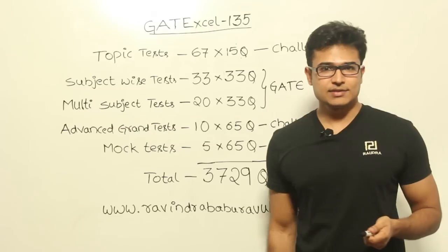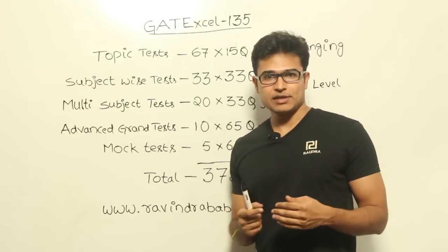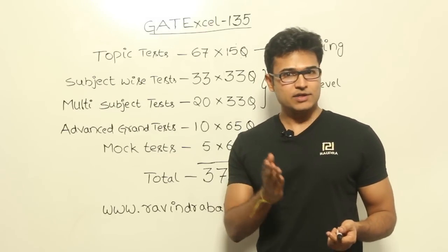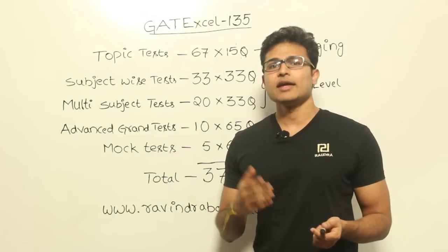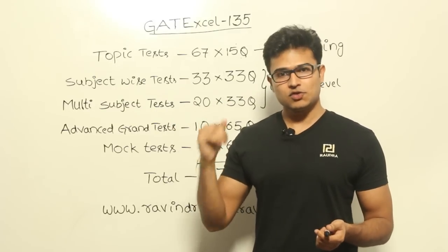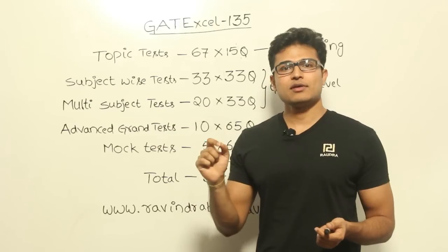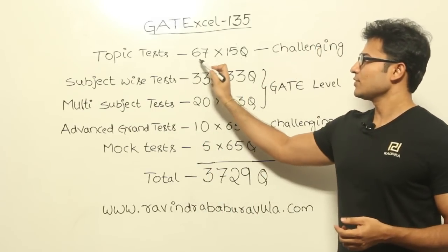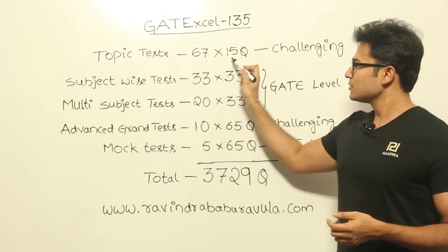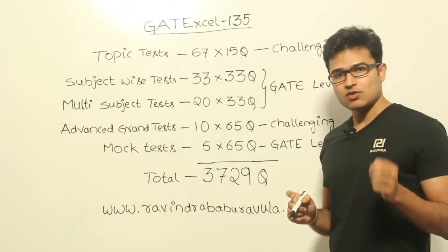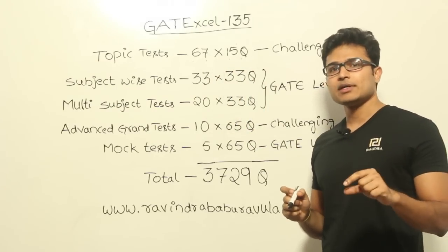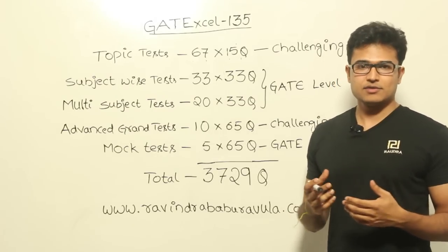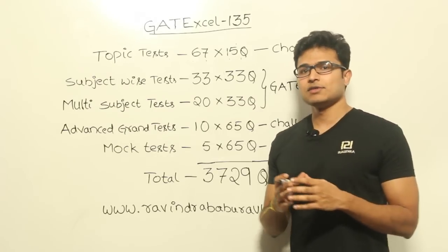The first one is topic-wise test. Topic-wise test means if you take each subject it is going to contain many topics. For example, if you take TOC it is going to contain DFA — DFA is a topic, NFA is a topic — like that. So for every subject we'll take each topic and for each topic we have created a test. We are going to have 67 such tests and each test is going to contain 15 questions.